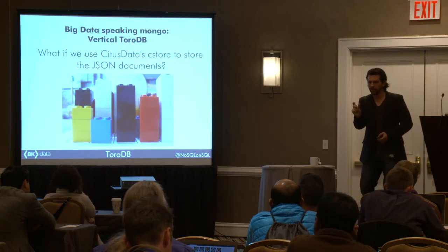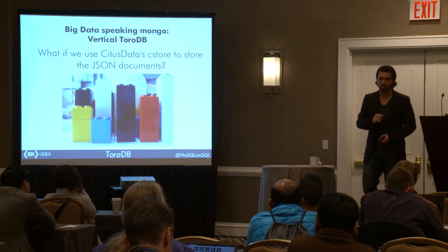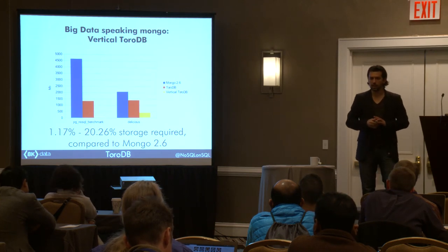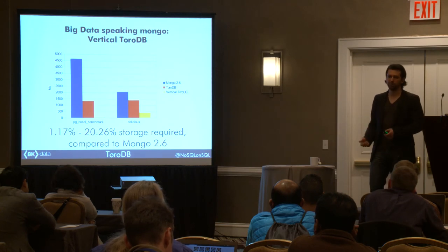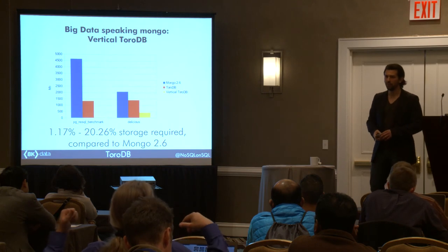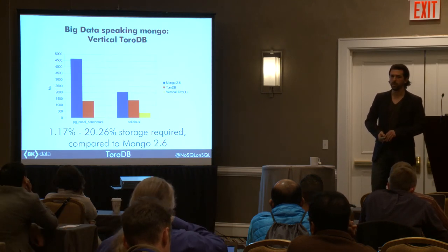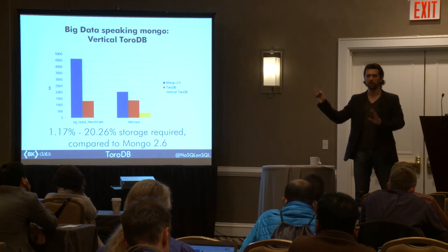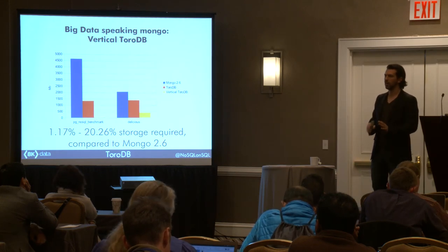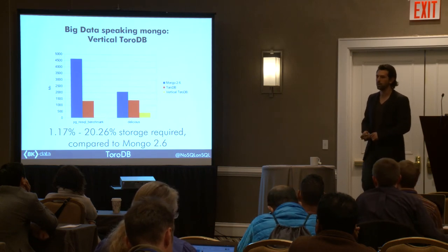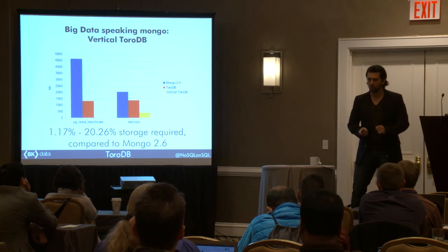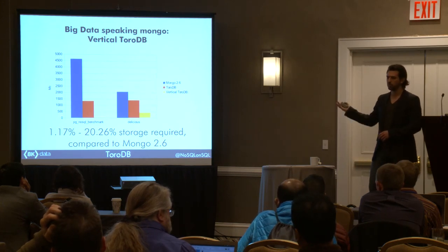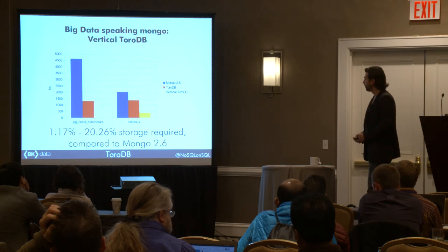What are the results we achieved with columnar storage? Comparing to MongoDB, we required from 20% down to just 1.17% of disk space to store the same information. This is a synthetic benchmark — it was done by EnterpriseDB comparing Postgres and Mongo, and we took that same data. We're storing in just 50 megabytes a collection of documents which took four and a half gigabytes in MongoDB. Imagine the potential — everything is going to be in RAM compared to disk.